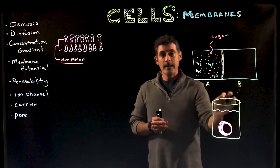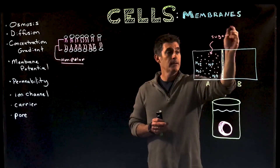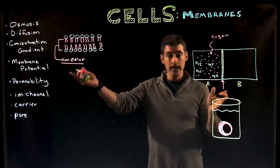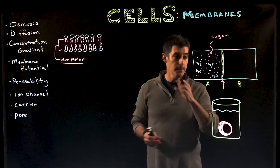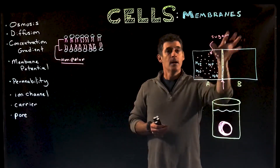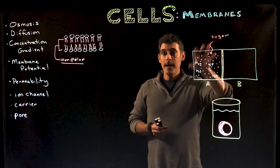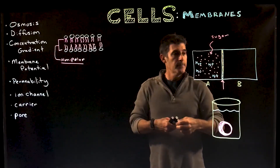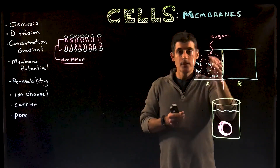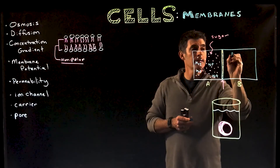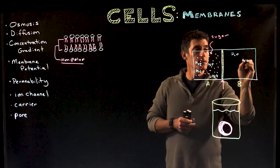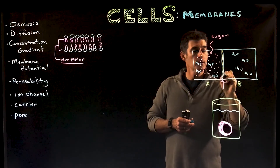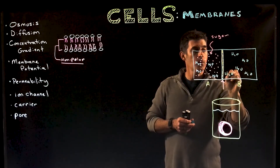Let's say we have a chamber and we divide it in half with a membrane — a phospholipid bilayer, just like this. This is done in a lab. To one side, we add a bunch of sugar molecules to the water that's already there. So one side has sugar plus water and the other side is just water, with no sugar molecules but a lot of water molecules.